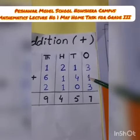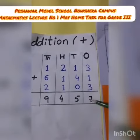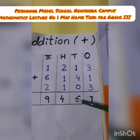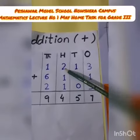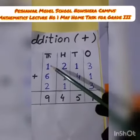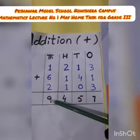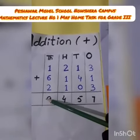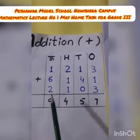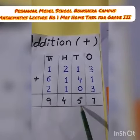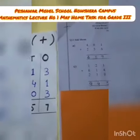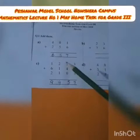3 plus 1 plus 3 is equal to 7. 1 plus 4 plus 0 is equal to 5. 2 plus 1 plus 1 is equal to 4. 1 plus 6 plus 2 is equal to 9. The sum of these three numbers is equal to 9457.